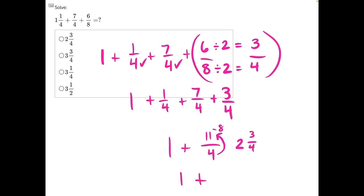So now our final step is adding one to that mixed number. And one plus two would give us three and three fourths, making answer choice B our correct answer.